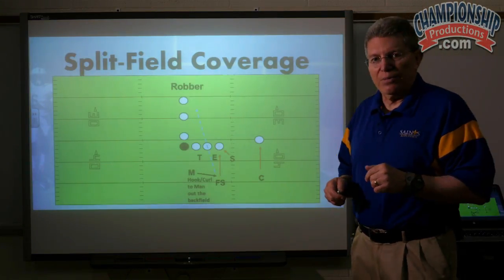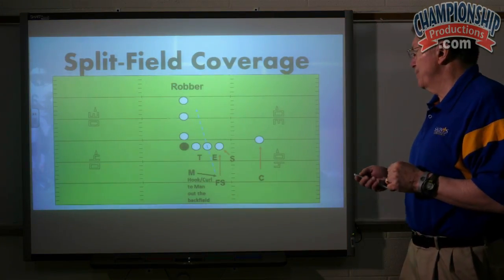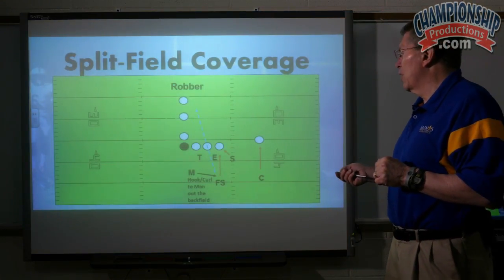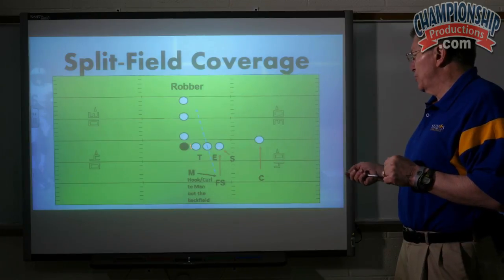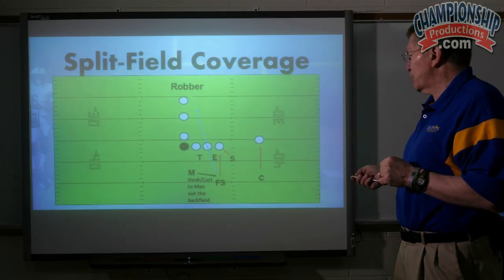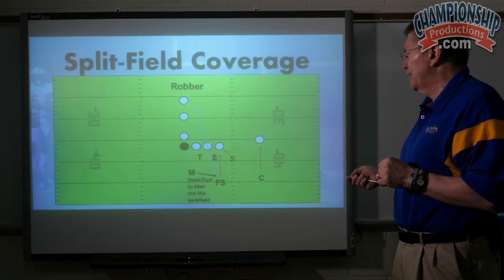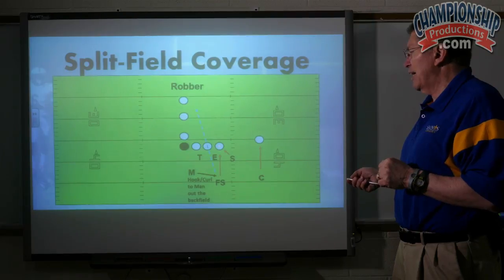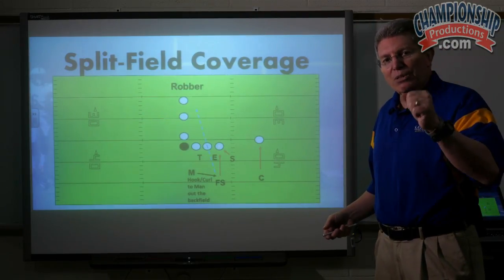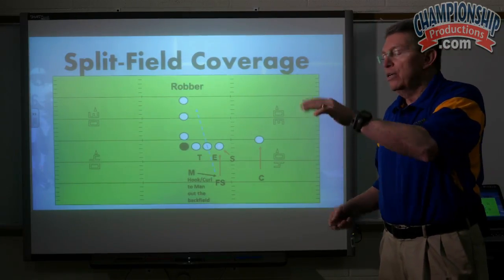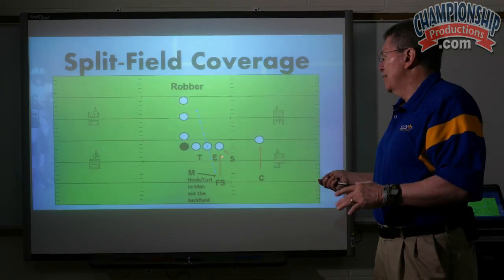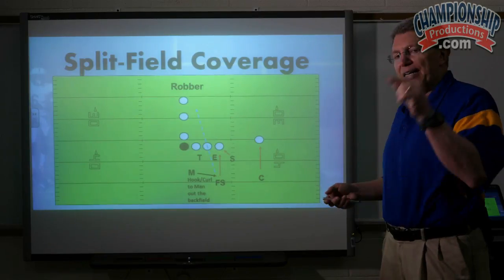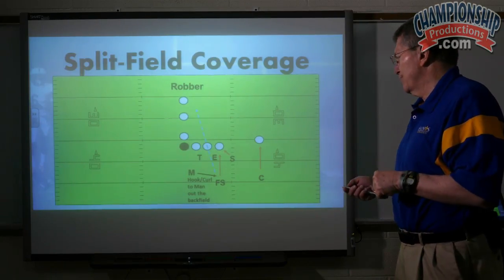Let me show you here with a diagram and talk you through it. You'll note the offense has come out. This is the read side because it's the pass strength side. They got two receivers here and they've got a tight end. Check robber — whatever we call, bets are off. They've got a tight end, so we're going to call robber coverage.